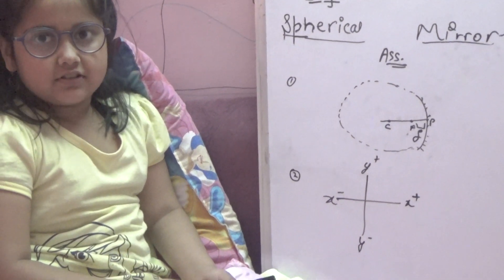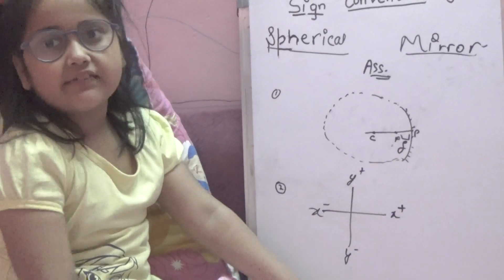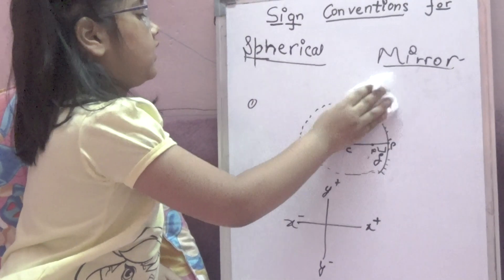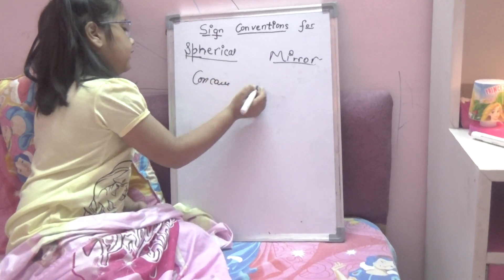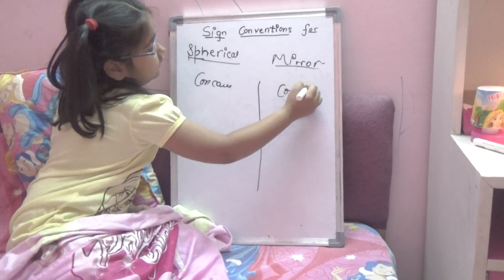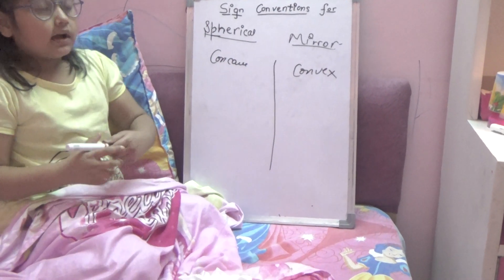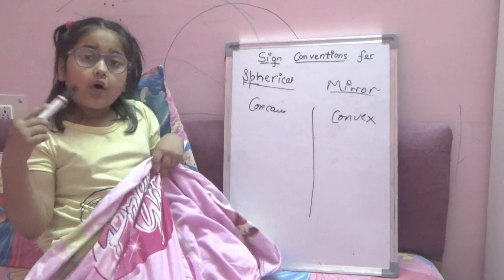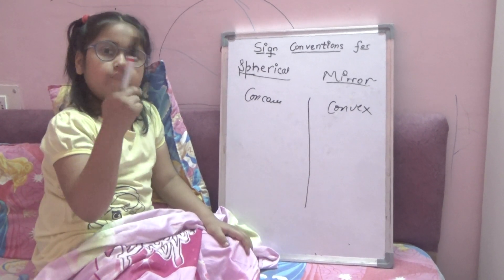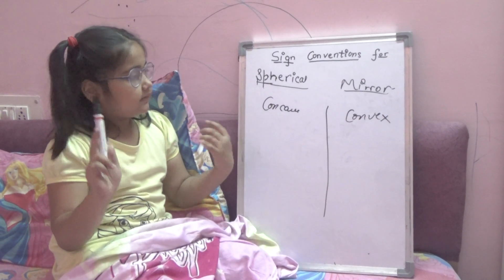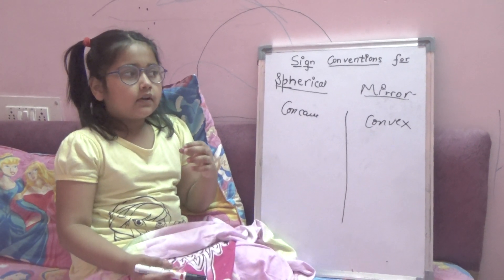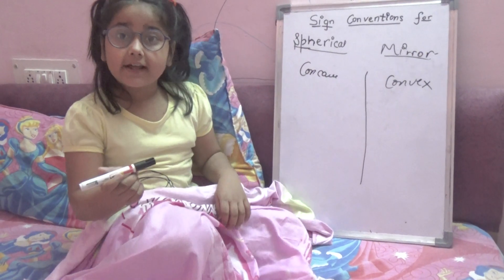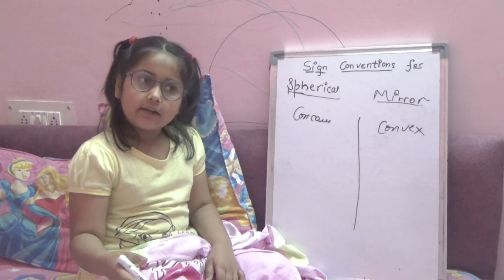Those were all the assumptions. Now let's study the sign conventions. I will tell you about them in both cases — the case of concave and the case of convex mirrors. The first sign convention is that all distances are measured from the pole. The second convention: all distances measured against the direction of the incident ray are taken as negative.